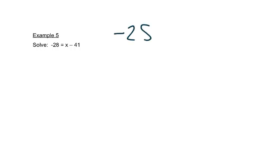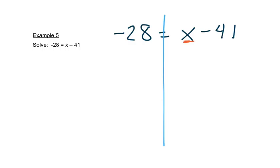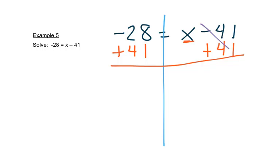Let's look at this one. We'll start by drawing a line down the middle. Our letter is on the left, and we want to see what else is on the same side. It says minus 41, so that's subtraction. The opposite operation is addition. It was subtracting 41, so we want to add 41 to both sides. That cancels out over here and leaves us with just x. On the left hand side we do negative 28 plus 41 and we get 13.